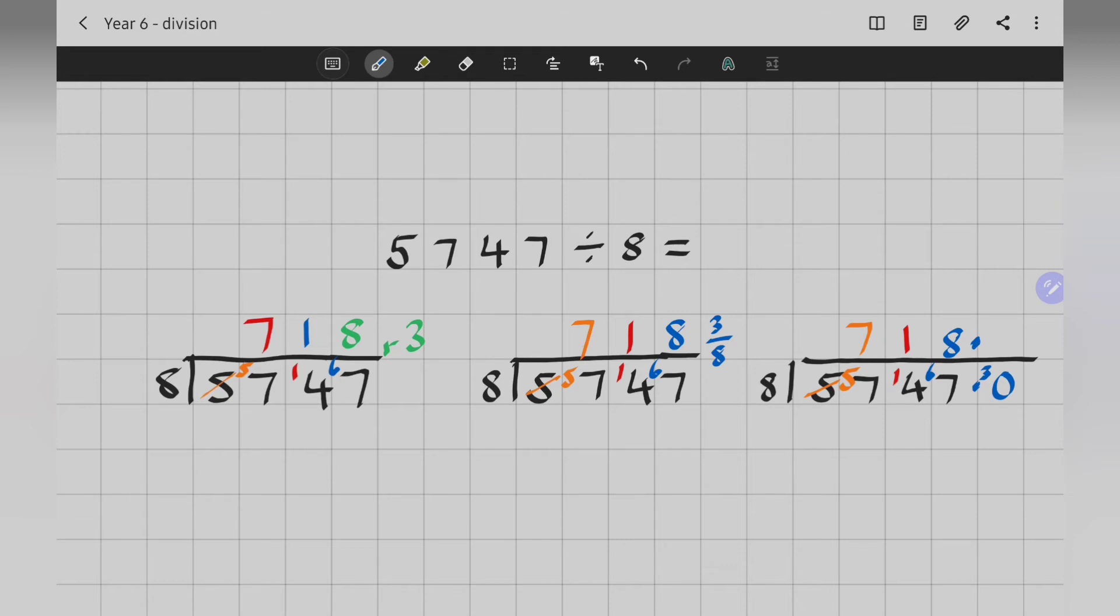8 into 30. How many 8s? Well, 3 eights will go. Into 30. 8, 16, 24. I've got 6 left over. Here we go then. I'm going to pass on my 6. 8s into 60. Well, that goes 7 times. 7 times 8 is 56. I've got 4 left over this time. I need another 0. There's my 4. 8s into 40 go 5 times.